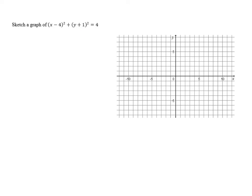So the center gets shifted to the right 4 and down 1, making the center the point (4, negative 1). Then because r squared is 4, we know that the radius is 2.